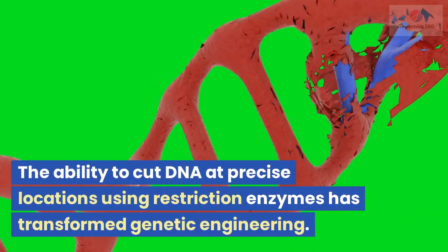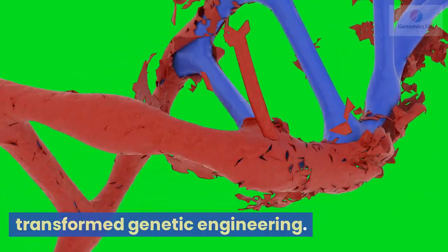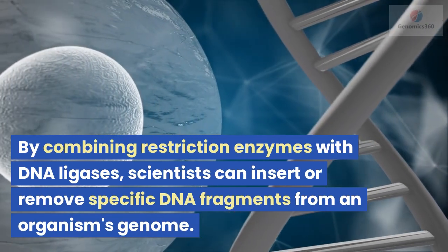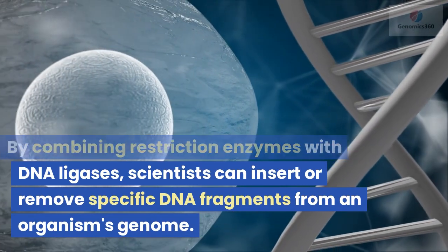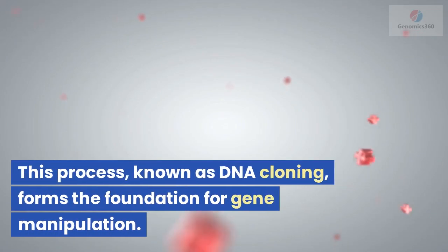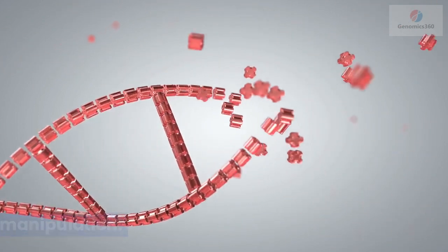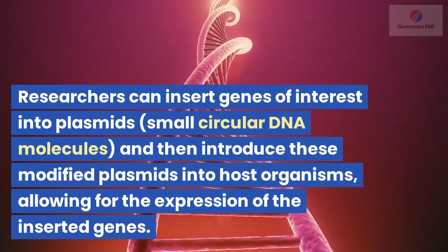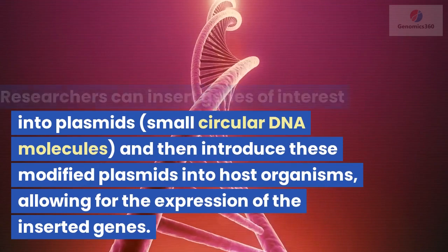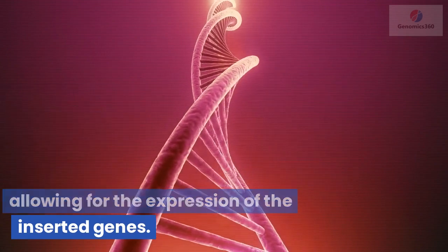The ability to cut DNA at precise locations using restriction enzymes has transformed genetic engineering. By combining restriction enzymes with DNA ligases, scientists can insert or remove specific DNA fragments from an organism's genome. This process, known as DNA cloning, forms the foundation for gene manipulation. Researchers can insert genes of interest into plasmids — small circular DNA molecules — and then introduce these modified plasmids into host organisms, allowing for the expression of the inserted genes.